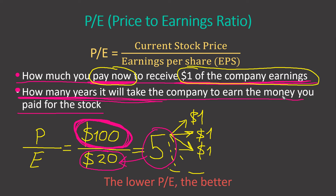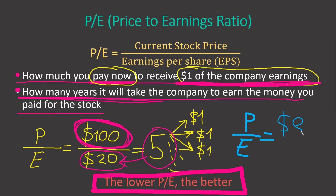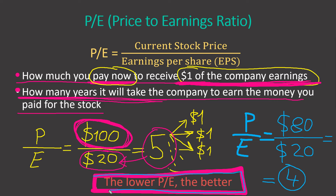Obviously, as an investor, what you want is a low P/E — the lower the better. Because the lower the P/E, the less you pay to receive $1 of earnings, and the less time it takes to earn back your initial investment. For example, if the price drops to $80 and earnings stay the same, the P/E becomes 4, which is better than 5.